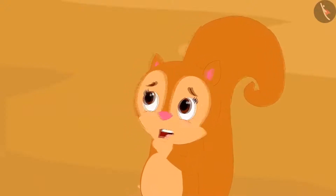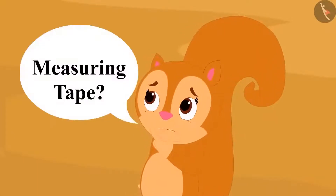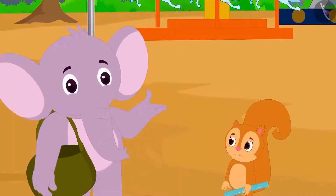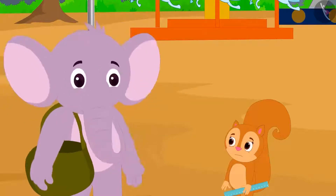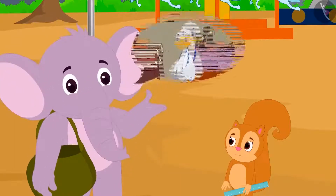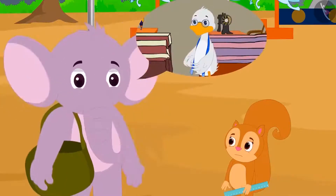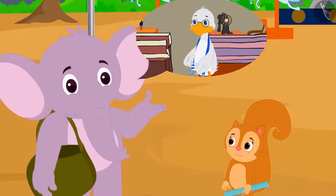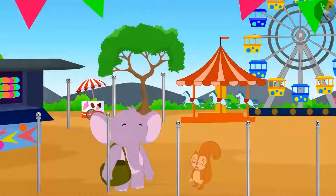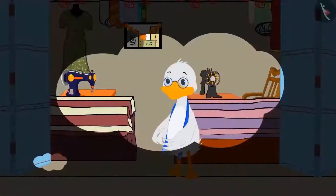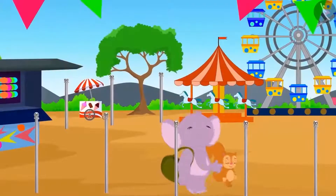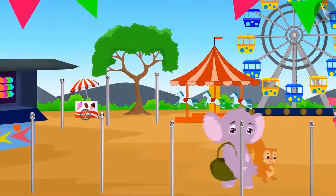Chanda said she had never seen a measuring tape and asked if Appu could show her. Appu told her that he doesn't have it at that moment, but if she met him at uncle's shop the next day, he would borrow the measuring tape from uncle and show it to her. Chanda agreed, and the two decided to meet at uncle's shop the next day and went to their respective homes.